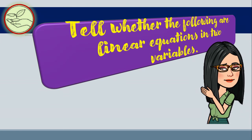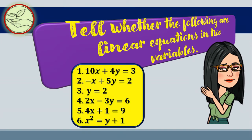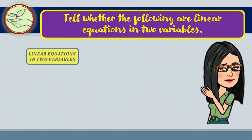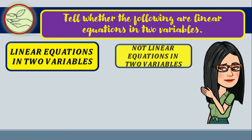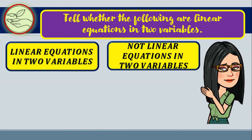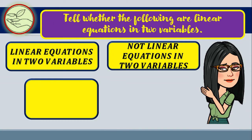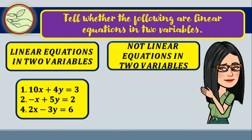Now, tell whether the following are linear equations in two variables: 10x plus 4y equals 3; negative x plus 5y equals 2; y equals 2; 2x minus 3y equals 6; 4x plus 1 equals 9; and x squared equals y plus 1. I have two groups here: linear equations in two variables, and not linear equations in two variables. Numbers 1, 2, and 4 are linear equations in two variables.